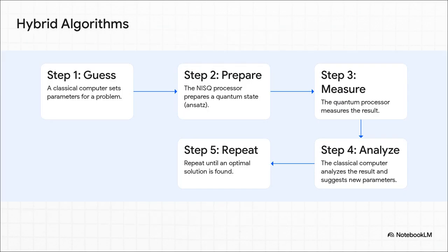The answer is teamwork. We use these clever hybrid algorithms where a classical computer and a quantum processor work together. Think of it like a conversation. The classical computer makes an educated guess and tells the quantum computer, hey, try this out. The quantum computer then prepares a specific quantum state that's called an ansatz, which is kind of like the quantum part of the guess. It measures the result, sends back its noisy answer, and then the classical computer looks at it and says, okay, that's interesting. Let's try this slightly different question. They just keep repeating this loop, getting closer and closer to the right answer with every cycle.